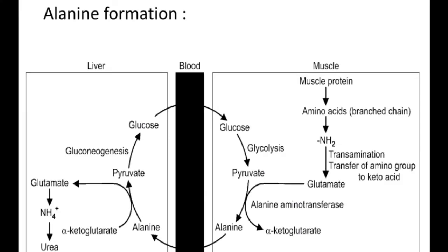Now coming to the formation of alanine: alanine transports ammonia from the muscles to the liver. During transamination of amino acids in muscle, the amino group is transferred to glutamate. Glutamate can then transfer its amino group to pyruvate to form alanine, and alanine then transports that amino group to the liver.